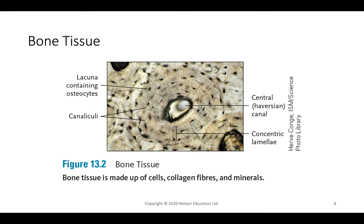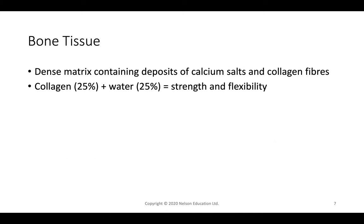Looking at bone tissue under a microscope, you'll notice it looks like a series of tree rings. Inside are central canals, and the lacunae contain specialty cells called osteocytes — bone-creating tissue. Little channels called canaliculi run between them. Bone tissue is a dense substance mainly made up of bone cells, minerals with constant calcium deposition, and collagen fibers, which give bones strength and flexibility.